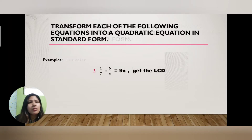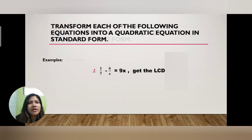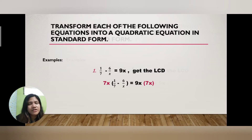Example number one: 1/7 minus 6/x is equal to 9x. First, we are going to find the LCD — the least common denominator. The denominators in the given equation are 7 and x. Since 7 is a number and x is a variable, we combine them, so the LCD is 7x.